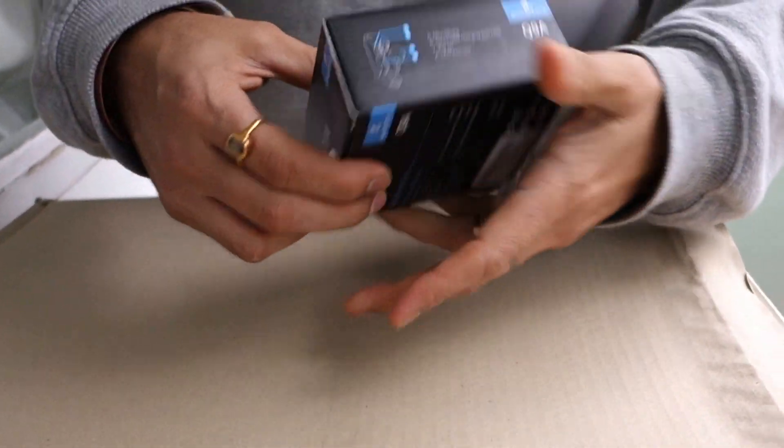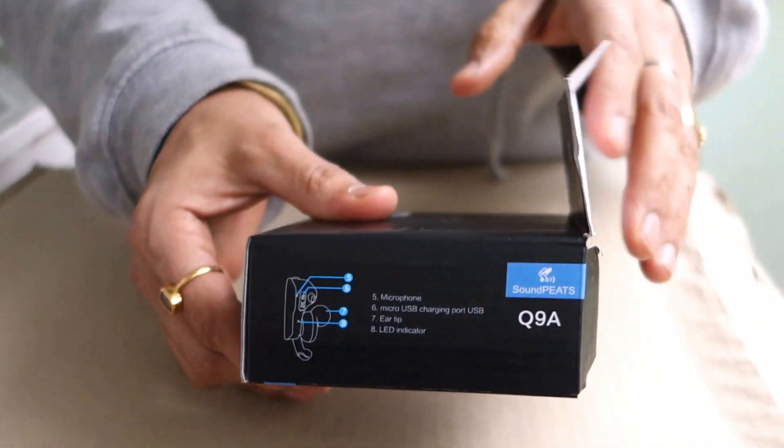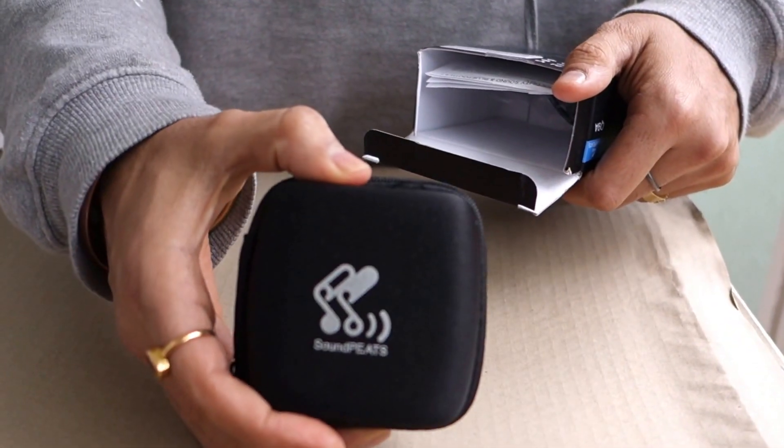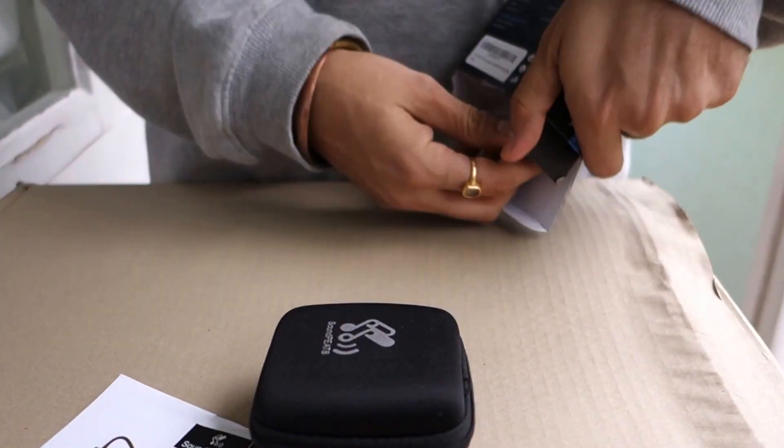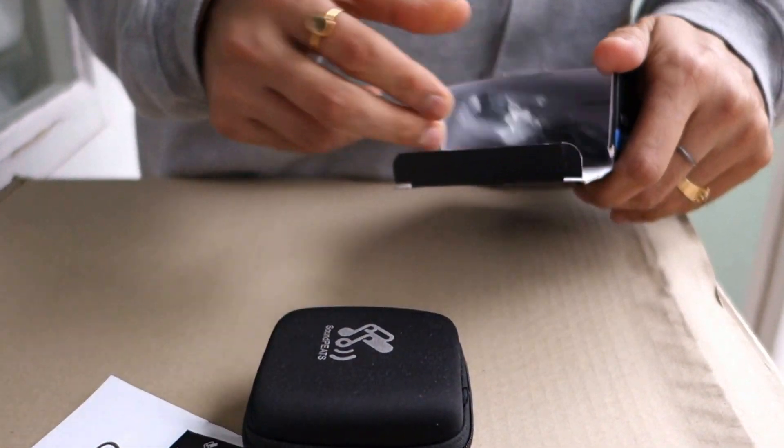The things that you see on the side here, you have a couple of buttons and I think it's better described once we see it inside. Once you open the box you're greeted with the SoundPEATS box with user manual and USB 3.0 charging cable.